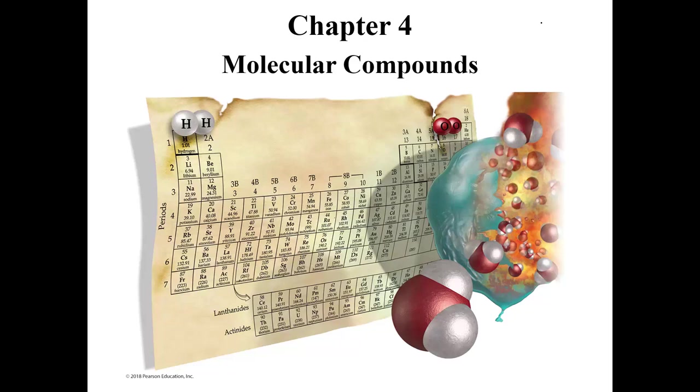Chapter 4 is entitled Molecular Compounds. We are finally going to get into bonding. We've been exposed to a lot of things - the periodic table in a nutshell, what electrons are doing, quantum numbers, and periodic trends. Now we're going to look at the building blocks and the different kinds of compounds.